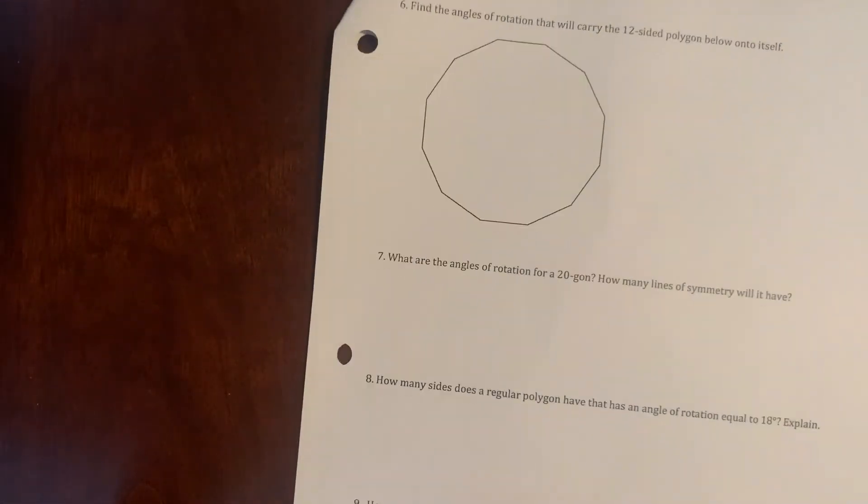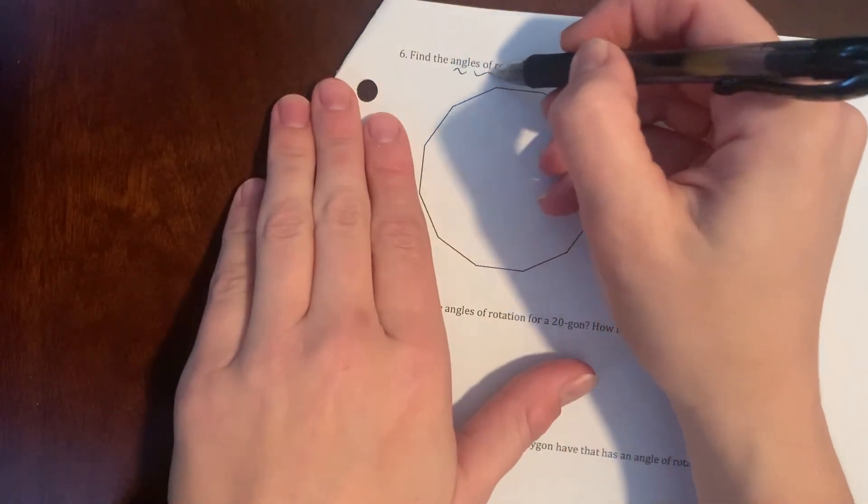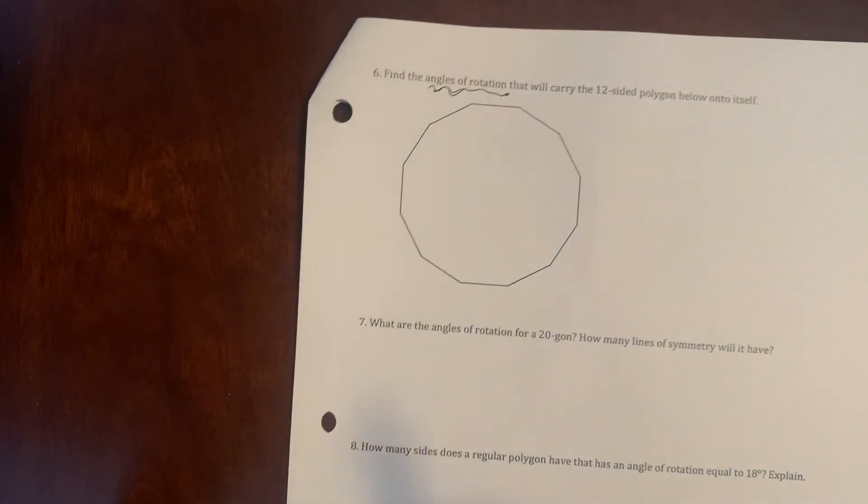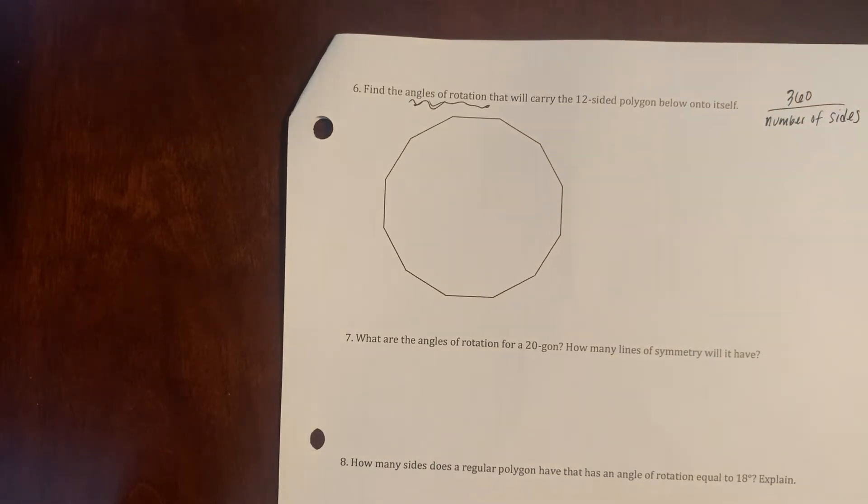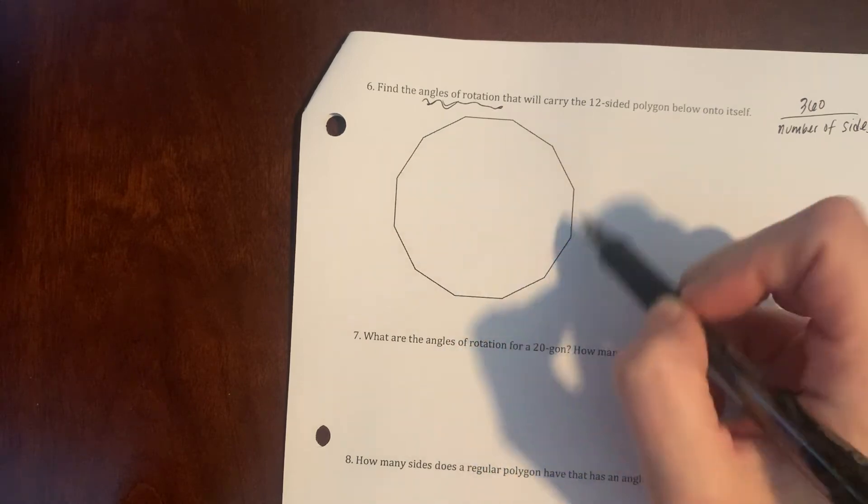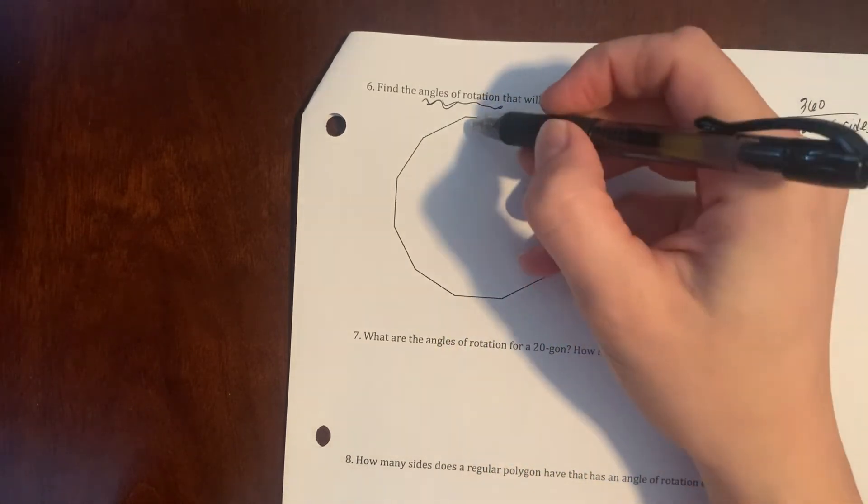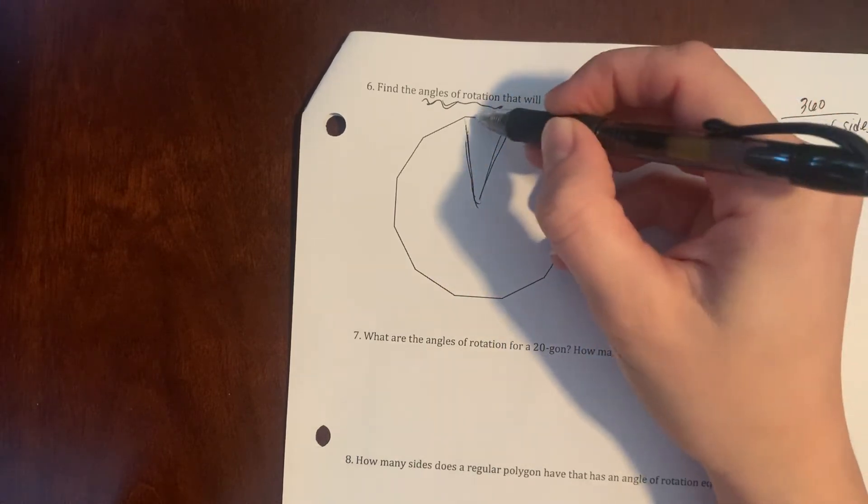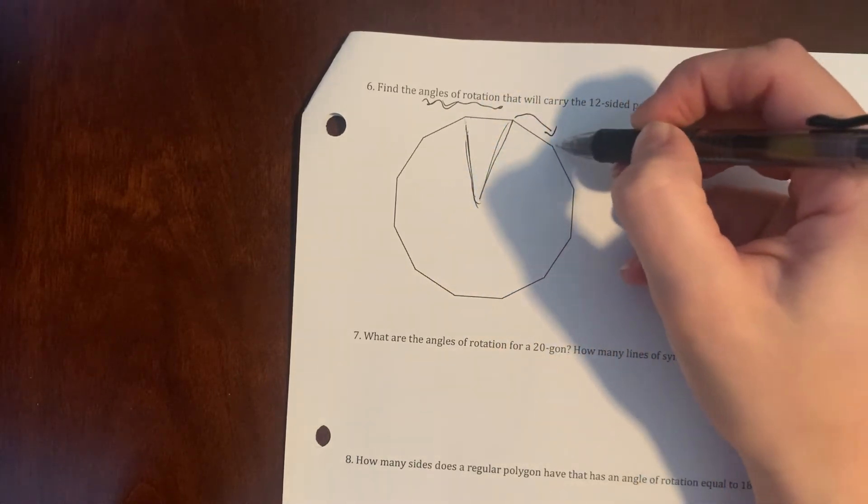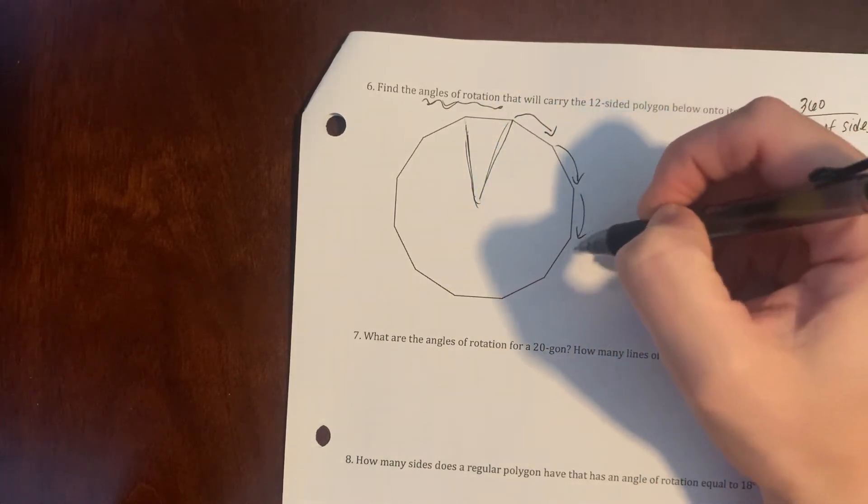All right, so this next page talks about angles of rotation. And we did this in our notes where we take 360 divided by the number of sides. That's how you find an angle of rotation. So here I have a 12-sided polygon, so if I were to split this into 12 sections, it's asking how many times, what are the degrees I mean, that I would turn each time.